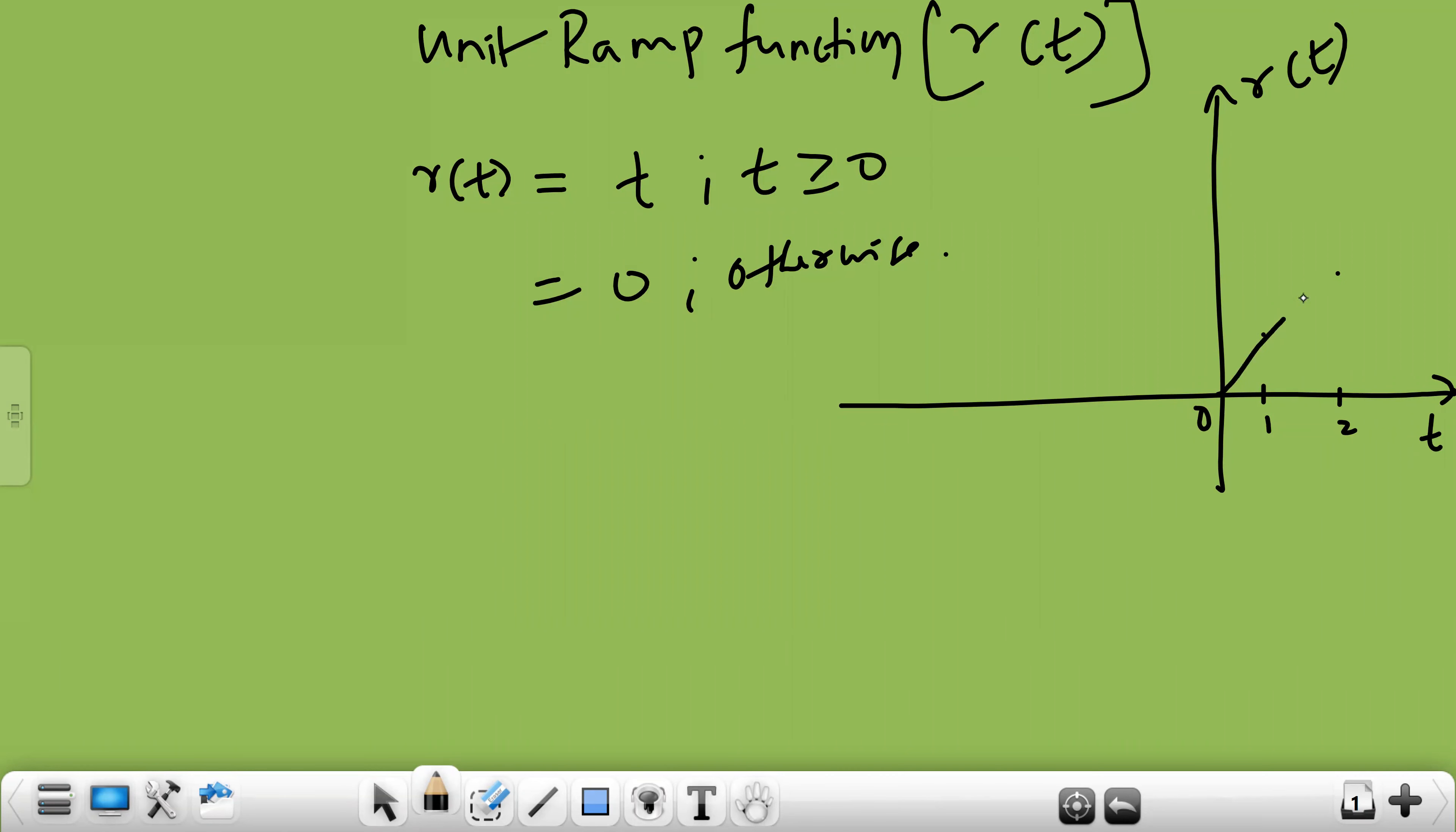If you join this waveform, you will get a straight line like this. So at the 1 you are having 1, at the 2 you will be having 2, at the time t equal to 3 you are having 3 like that.